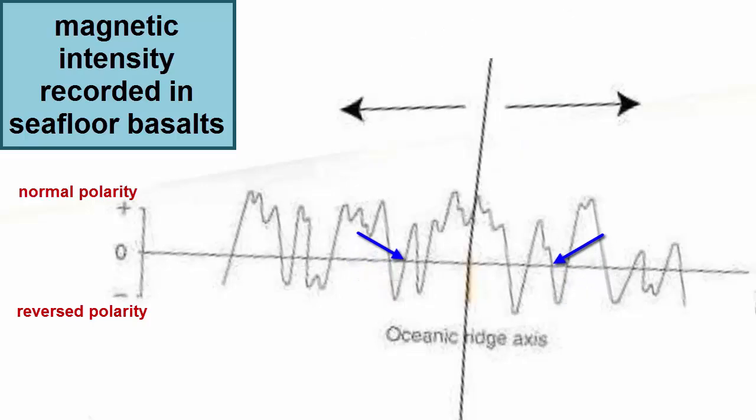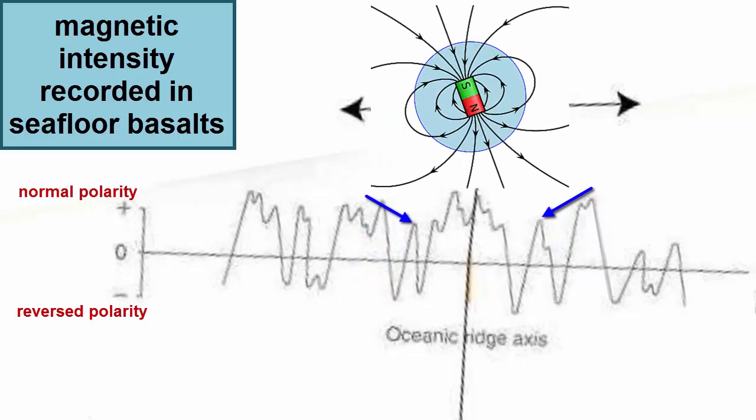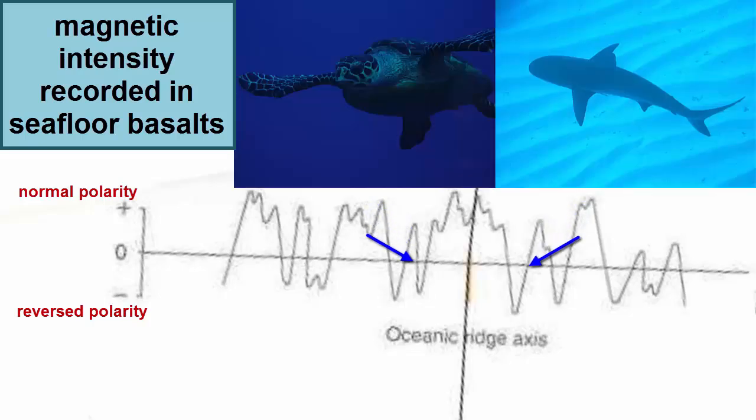What happens during a switch in magnetic polarity? We have no evidence from the fossil or rock world that a switch has ever caused an extinction. There are many organisms that seem to use Earth's magnetic field to help them navigate, but presumably they also use other clues, including visual cues.